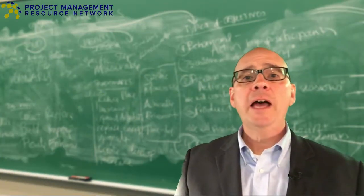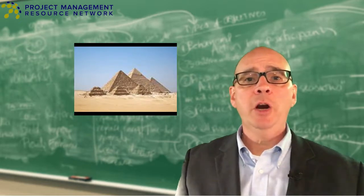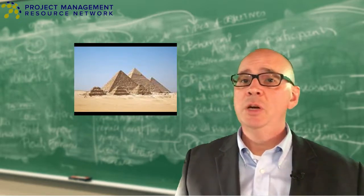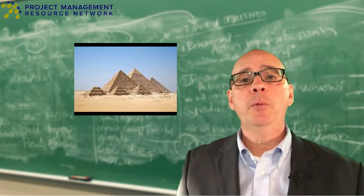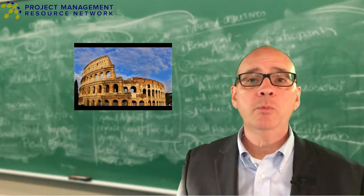Well over 4,000 years ago, Egyptian pyramids were constructed. Some 2,000 years after the pyramids were completed, the Roman Colosseum was built.